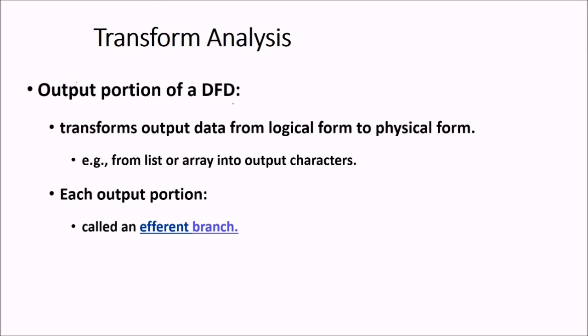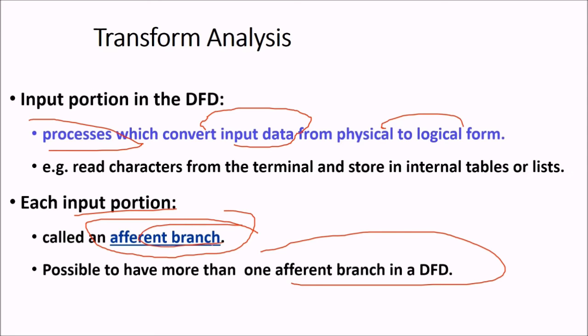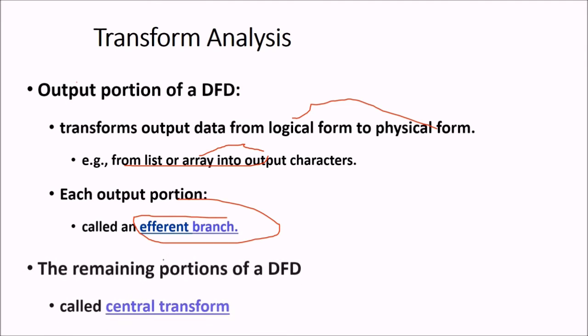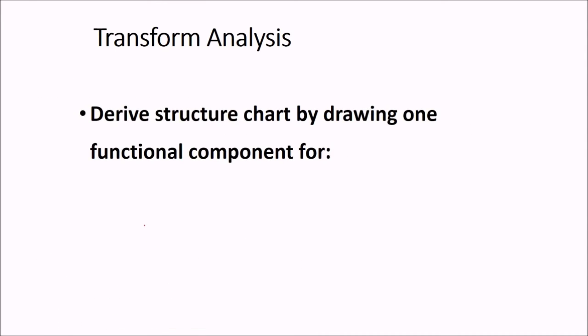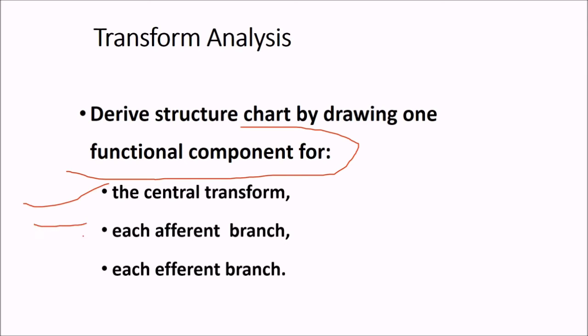Then coming to output portion, second part of a DFD. What it does, it transforms the output data from logical to physical form. For example, from list into output characters. And again, each output portion is called an efferent branch, efferent branch. So the remaining portion of DFD is called the central transform. Then we derive structure chart by drawing one functional component for the central branch, each afferent branch, and then each efferent branch, input, output.